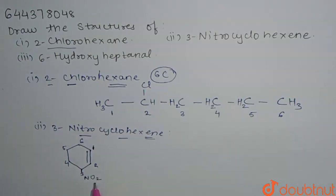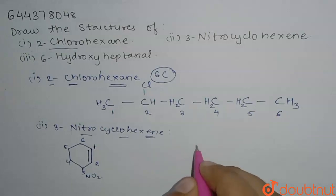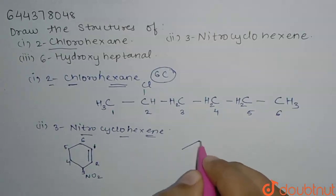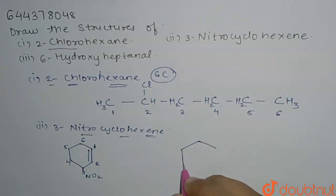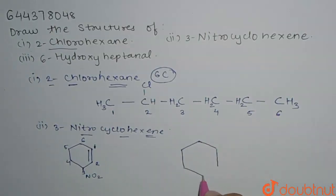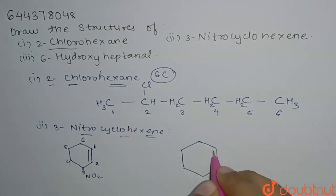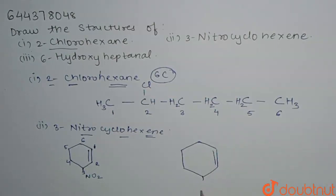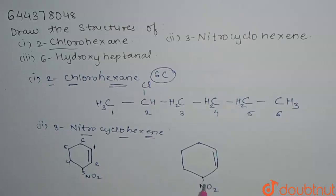So I will write here neatly. Here we have the double bond, and at the third position we have NO2. So this is the final structure for 3-nitrocyclohexane.